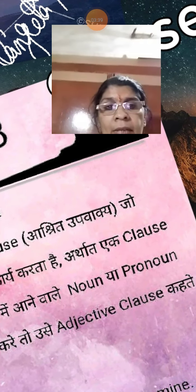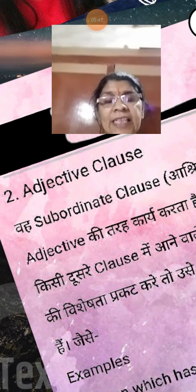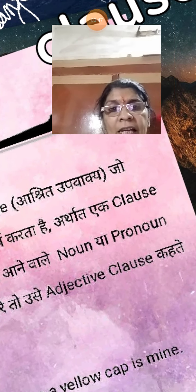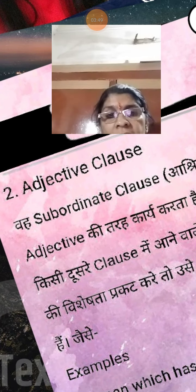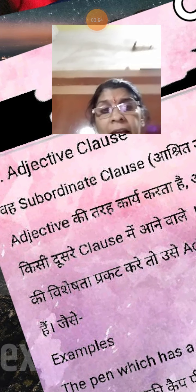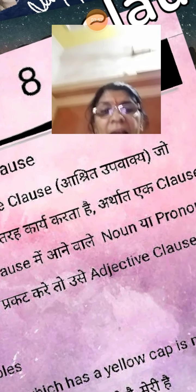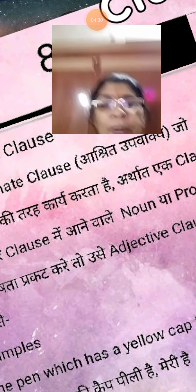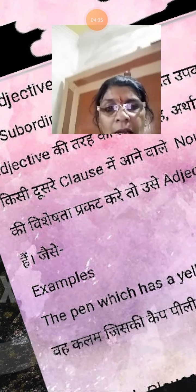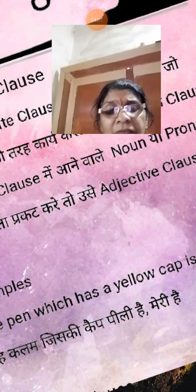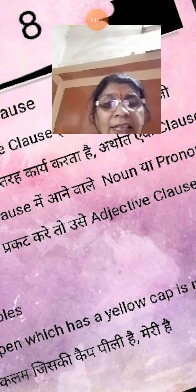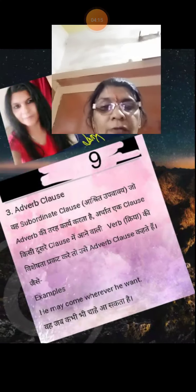Adjective clause: weh subordinate clause jo adjective ki tarah kaam karta hai — arthaat, jo kisi dousre clause mein aane waale noun ya pronoun ki visheshta prakar kare. Use adjective clause kehte hain. Example: 'The pen which has a yellow cap is mine.' Yahaan 'which has a yellow cap' adjective clause hai, jo dousre par depend bhi karta hai.